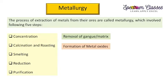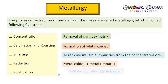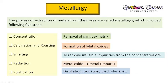Calcination, roasting and smelting are terms in which we are getting the metal oxides. Smelting is the heating of ores in the presence of some flux material and in the presence of air at high temperature, and is also used to remove infusible impurities from the concentrated ore. Reduction means getting metal from their metal oxide, since removal of oxygen from any element is called reduction. Purification of impure metals can be done through distillation, liquation, and electrolysis methods.